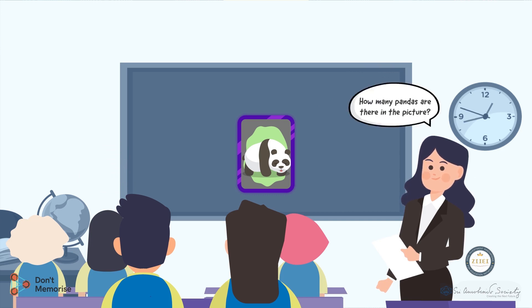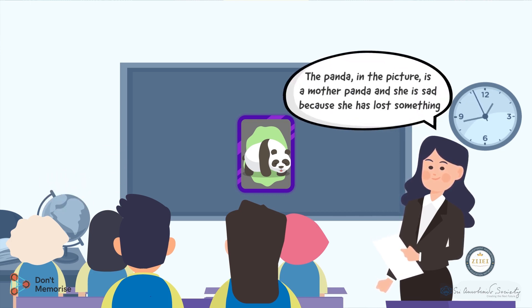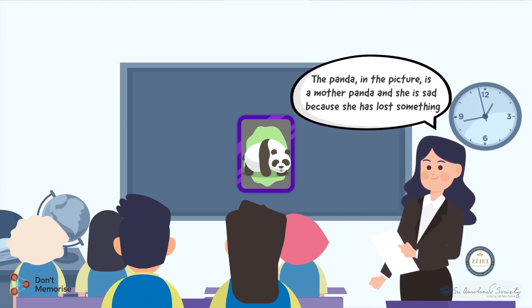Next, ask them how many pandas can they see. The students might answer, one. Inform them that the panda in the picture is a mother panda and she's sad because she's lost something.